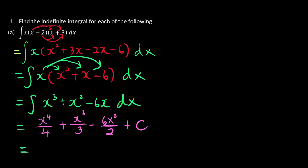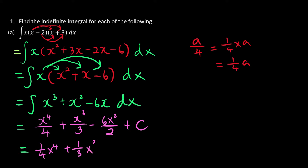Now we can just simplify. Just remember one thing: whenever we have something like a over 4, we can change it to become 1 over 4 times a, which is just 1 over 4 times a. So here we're going to have 1 over 4 times x to the power of 4, plus 1 over 3 times x to the power of 3, minus 6 divided by 2 is 3, times x squared plus c.